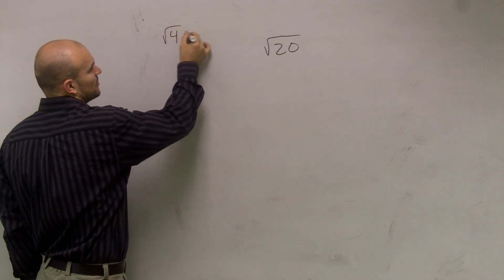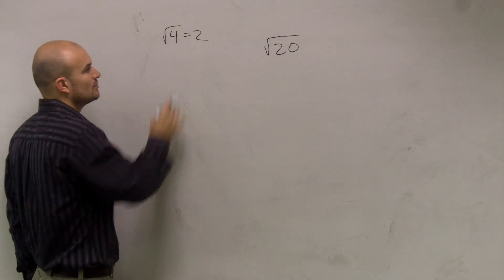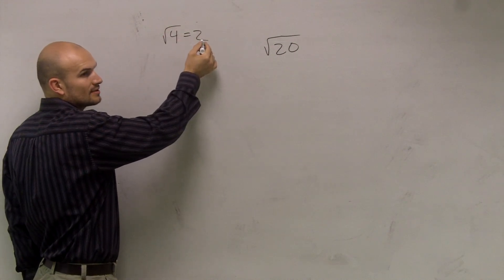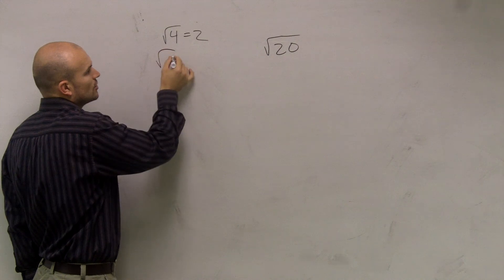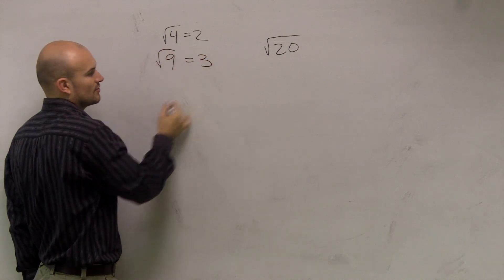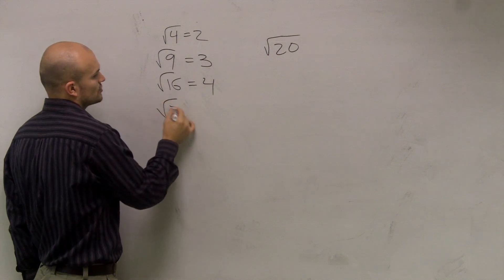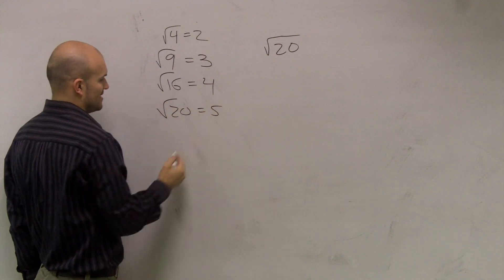Well, what we're doing, ladies and gentlemen, is we practice taking the root of numbers that we know. The square root of 4 is 2, meaning 2 times itself gives us 4. So the square root of 9 is 3. The square root of 16 is 4. The square root of 20 is 5.